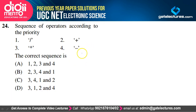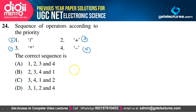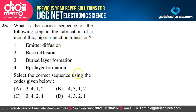For sequence of operators according to priority: first is asterisk (*), then the second, then plus (+) is third, and the fourth follows. Option D is the correct option.